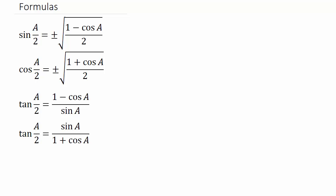In this video we're going to look at the half angle identities. We have the half angle identities for sine, cosine, and tangent. The half angle identities for sine and cosine are similar — the only difference is the sign between 1 and cosine a. We have two different identities for tangent, and it doesn't matter which one you use.